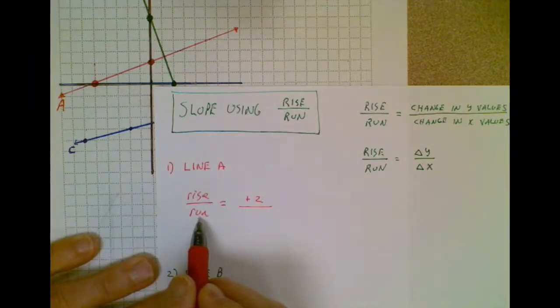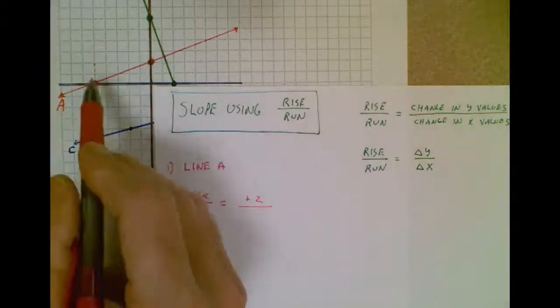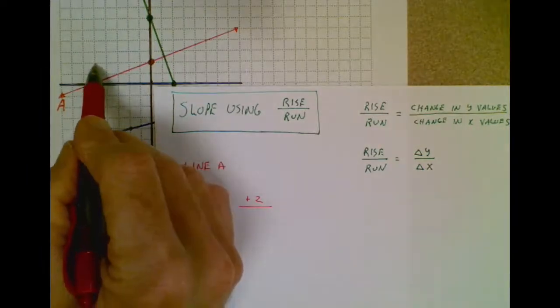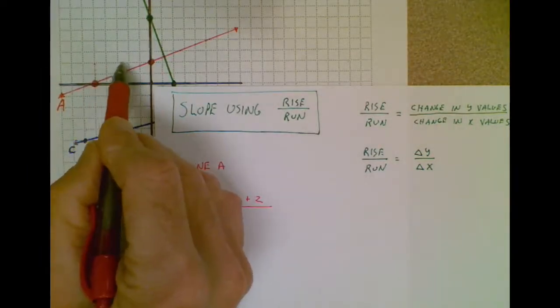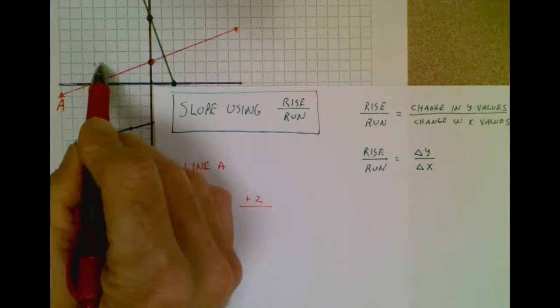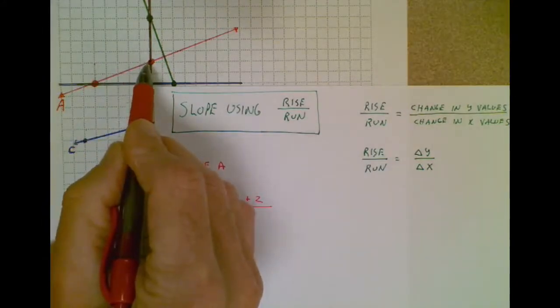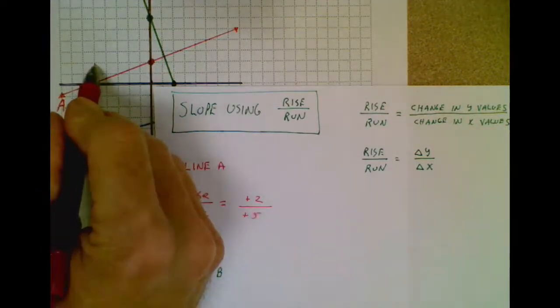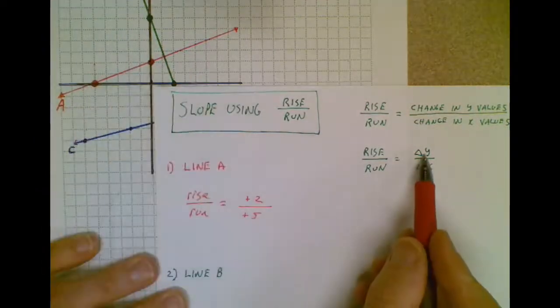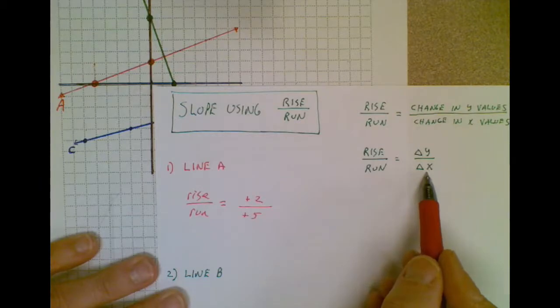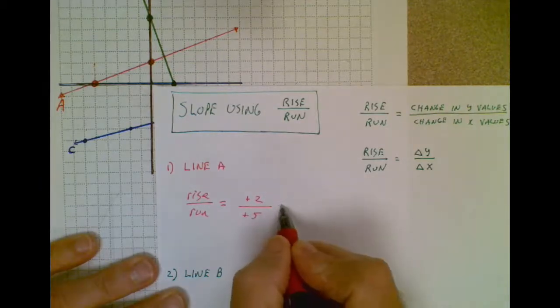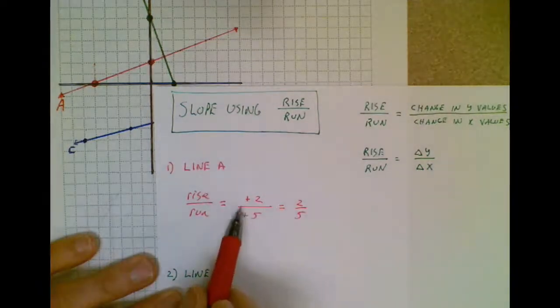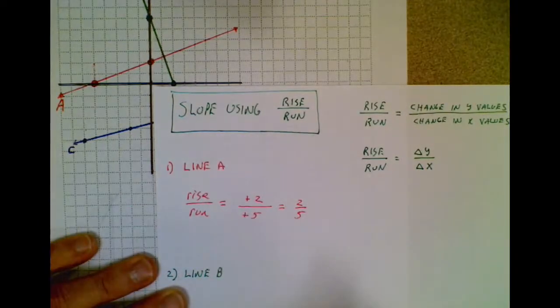So my rise is positive two, but I still have to get over here. My run is my change in x values. In other words, how far do I have to travel left or right? So if I rose two units, I had to run or move to the right five units. So it's a rise of two and a run of five, or a change in y over a change in x of two over five. And by the way, a positive two over a positive five is two-fifths, because a positive divided by a positive is a positive.